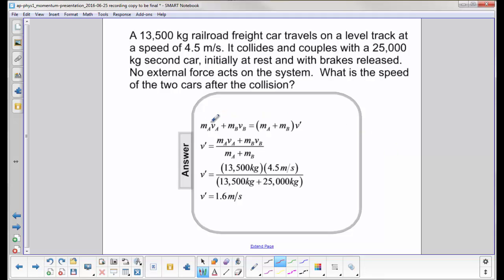So the appropriate equation is the initial momentum of both cars equals the total mass of the combined systems times v prime, where v prime is your final velocity.